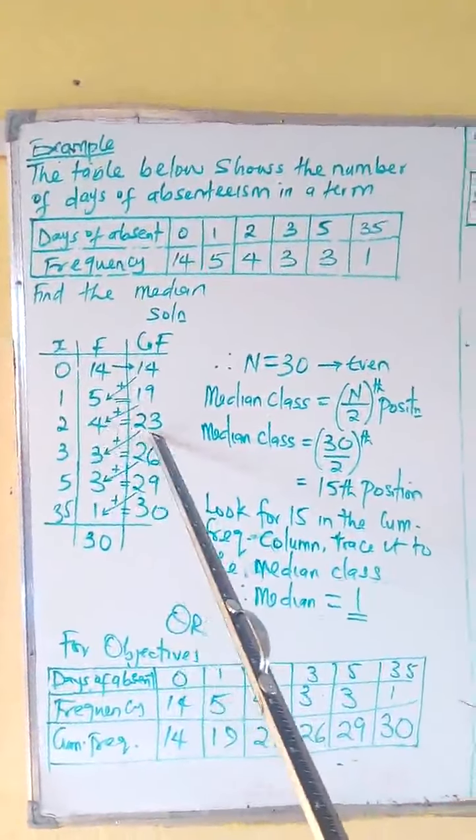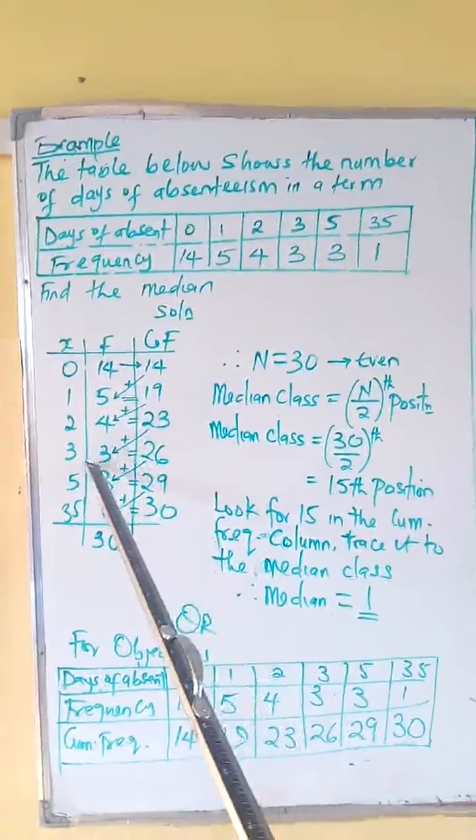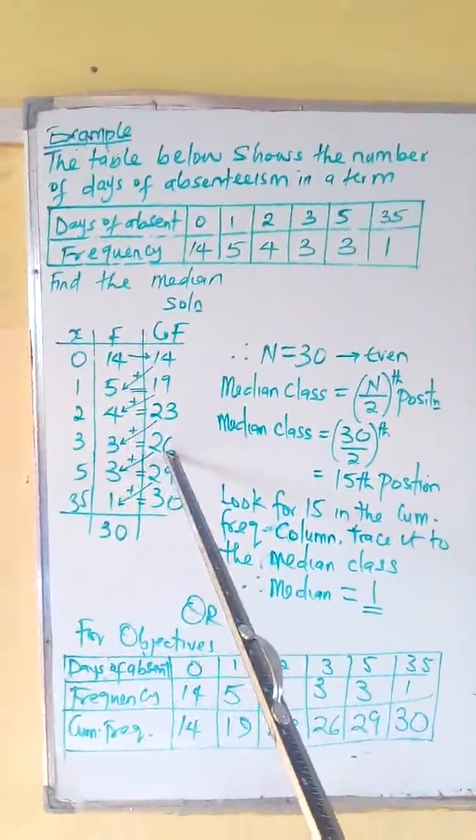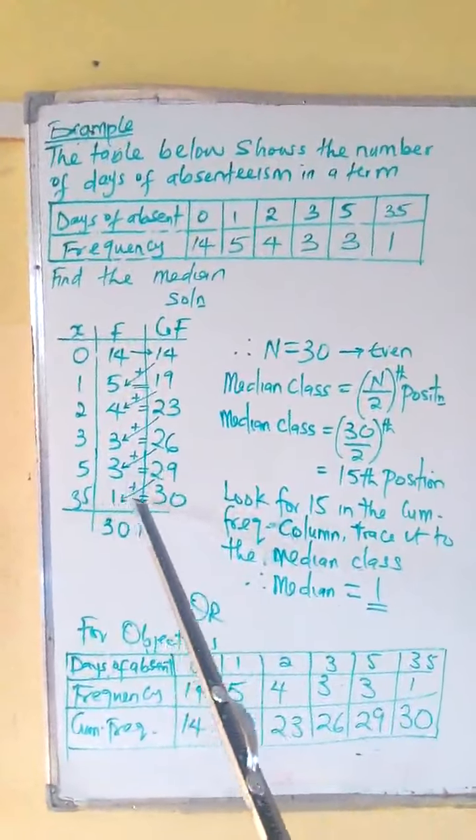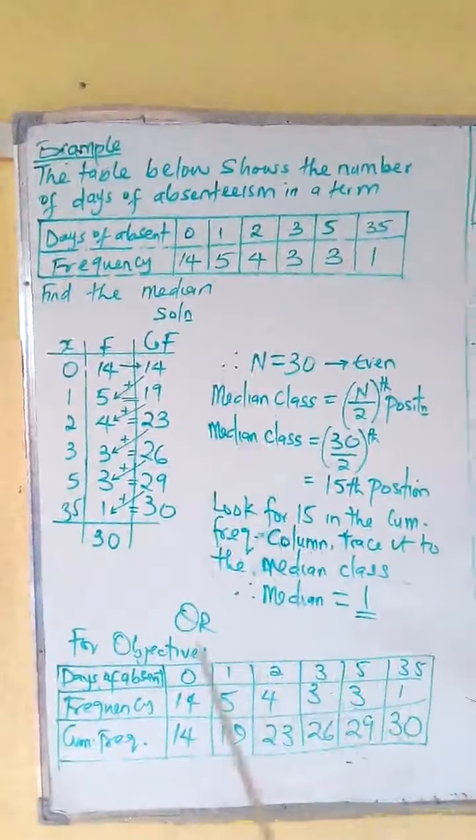19 plus 4, 23. 23 plus 3, 26. 26 plus 3, 29. 29 plus 1, 30. This is how you get your cumulative frequency.